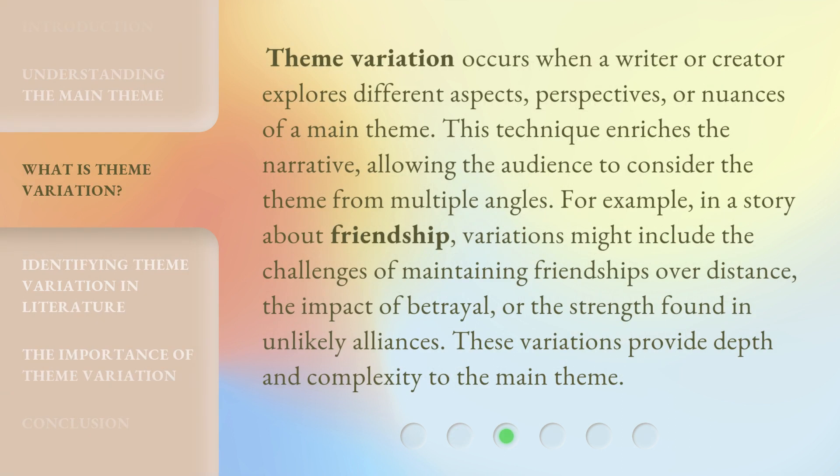Theme variation occurs when a writer or creator explores different aspects, perspectives, or nuances of a main theme. This technique enriches the narrative, allowing the audience to consider the theme from multiple angles. For example, in a story about friendship, variations might include the challenges of maintaining friendships over distance, the impact of betrayal, or the strength found in unlikely alliances. These variations provide depth and complexity to the main theme.